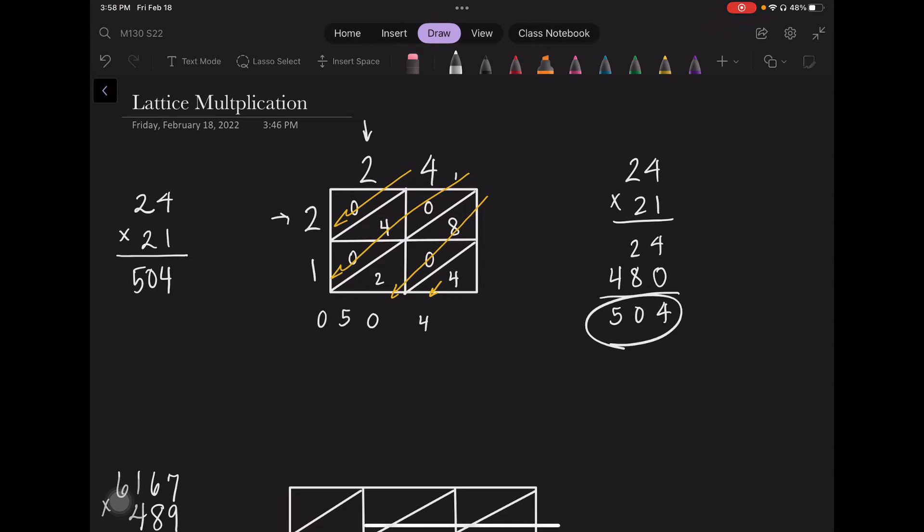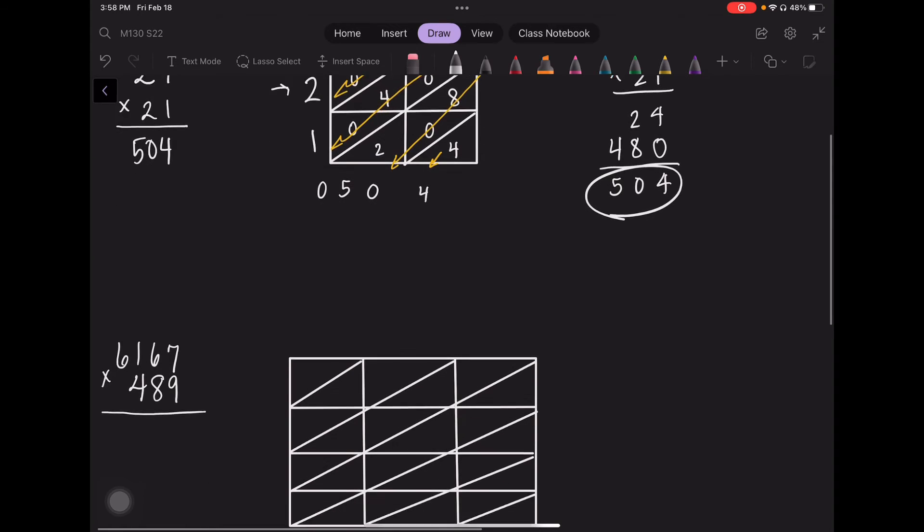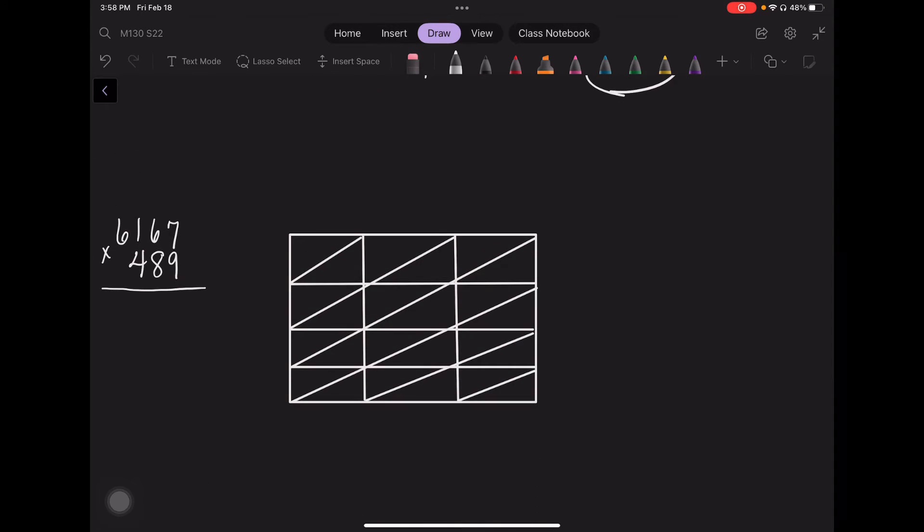Now let's see what happens when we have multiplication that brings about numbers that are greater than 10 in a single digit and what we do when we have larger numbers. If I was to multiply 6,167 by 489, I'm going to have three different rows where I'm going to have to drop down and carry over the zeros. And every time I do that, my numbers sometimes are larger or bigger and I have to stretch it and it doesn't always line up nicely.